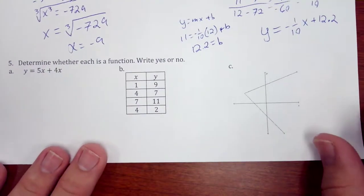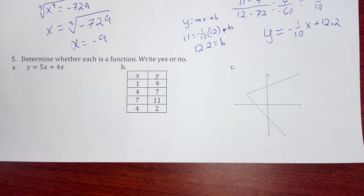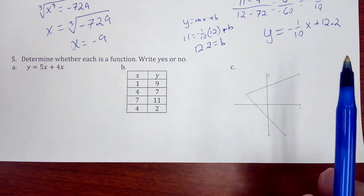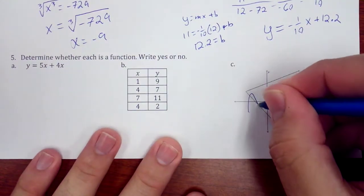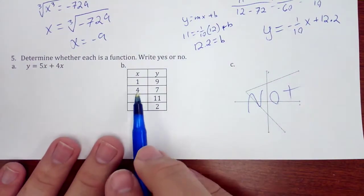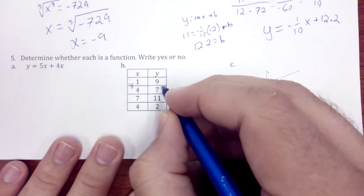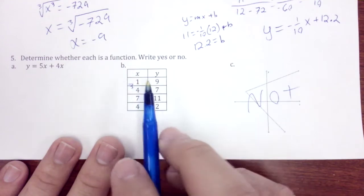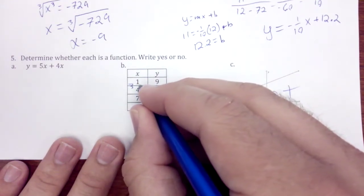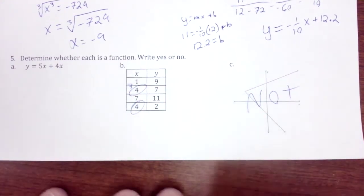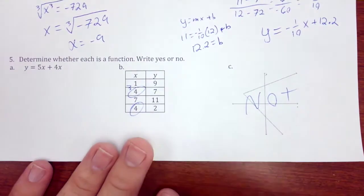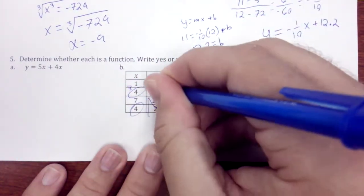Okay, determine whether each is a function, write yes or no. Not a function. Here we're going up 3. We have 2x inputs that are the same and 2 different y outputs, so this is not.